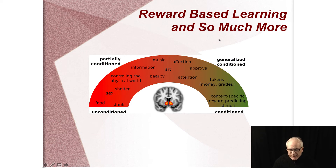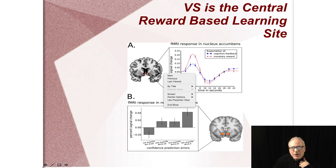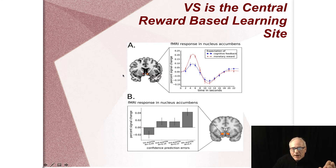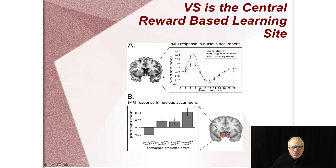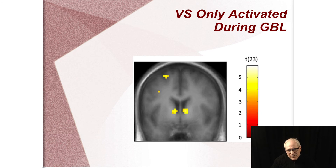This is reward-based learning — specifically the major learning reward center of the brain. A lot of what we do in life involves learning rewards: we associate a Cabernet brand with reward, we seek out beautiful music or art. All of these things trigger the ventral striatum. These fMRI figures — again on a logarithmic scale — show that the ventral striatum is only activated during game-based learning conditions in Howard-Jones' work. This means that when students are gaming, we're not only reducing the default mode spacing-out response, but we're also turning on the reward learning mechanisms in the brain.